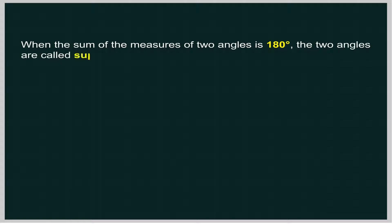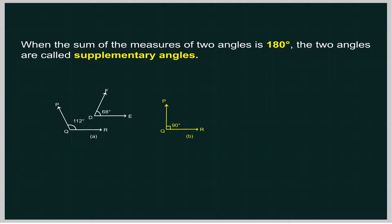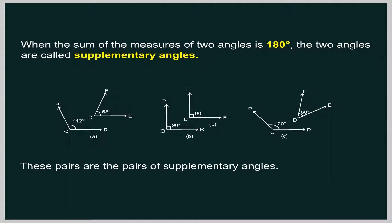When the sum of the measures of two angles is 180 degrees, the two angles are called supplementary angles. For example, angle PQR equals 112 degrees and angle FDE equals 68 degrees; angle PQR equals 90 degrees; angle PQR equals 120 degrees and angle FDE equals 60 degrees. Each of these pairs is a pair of supplementary angles.